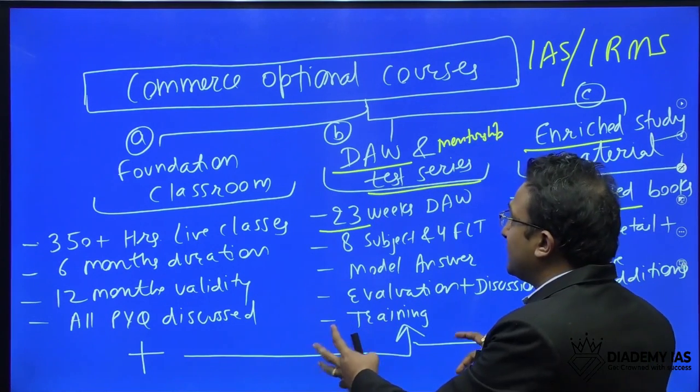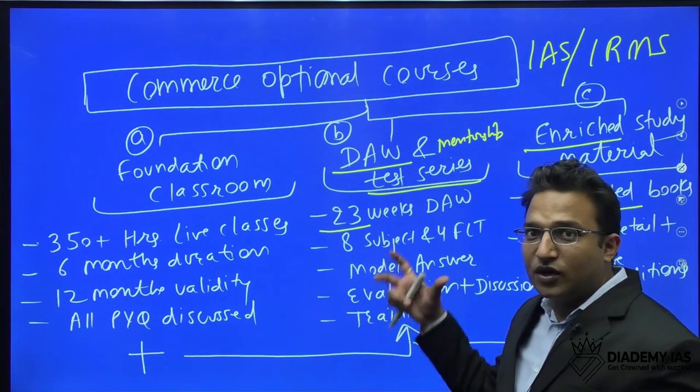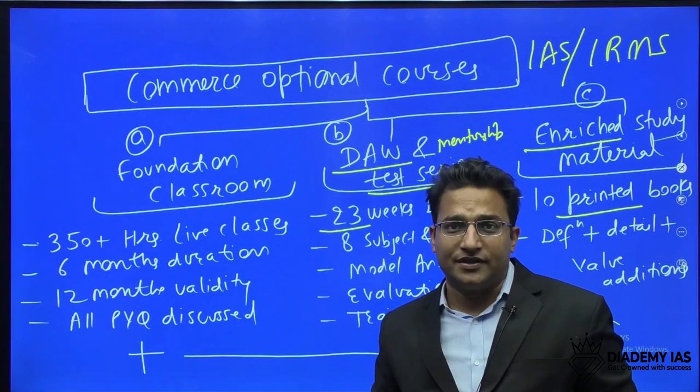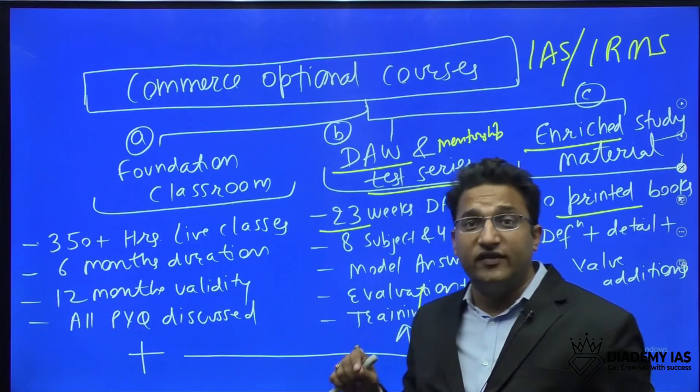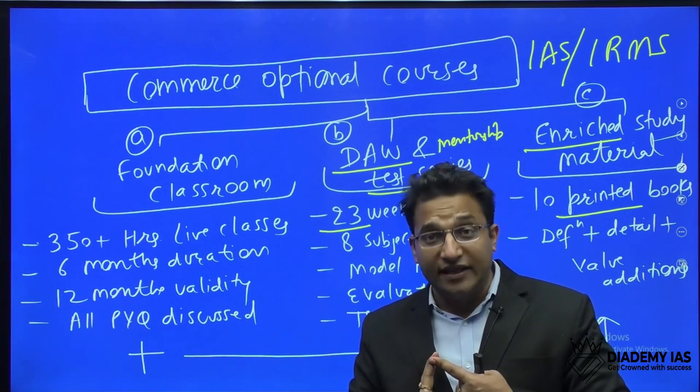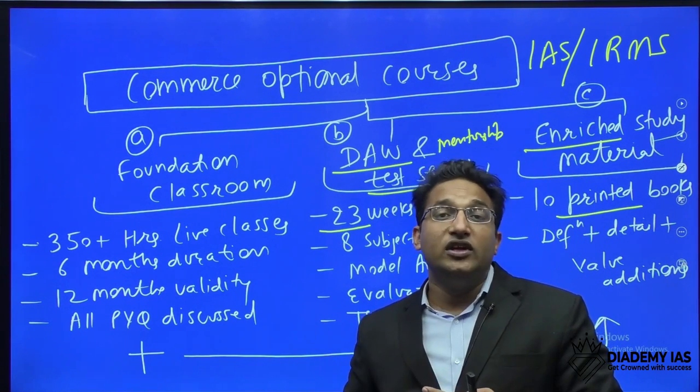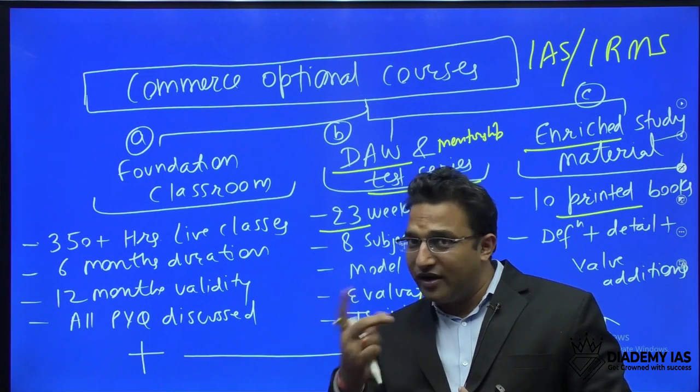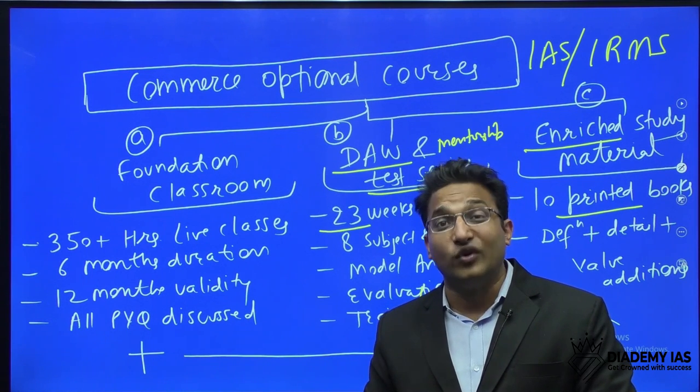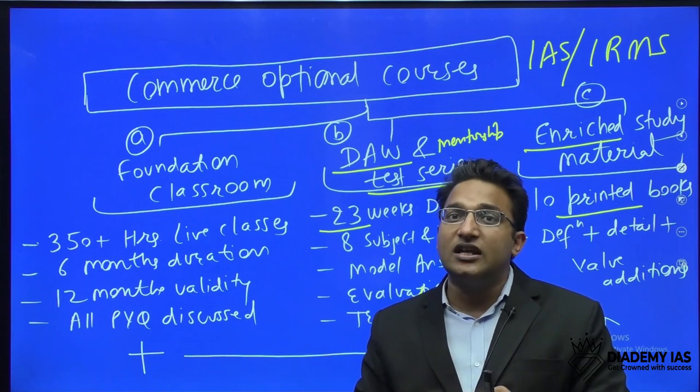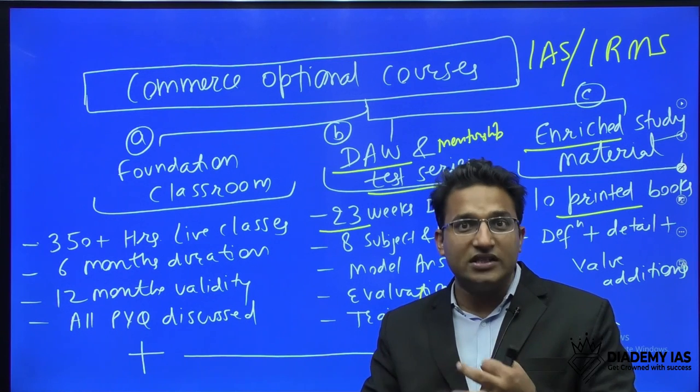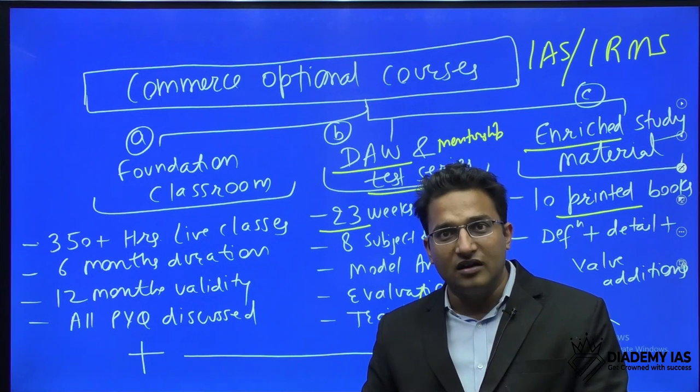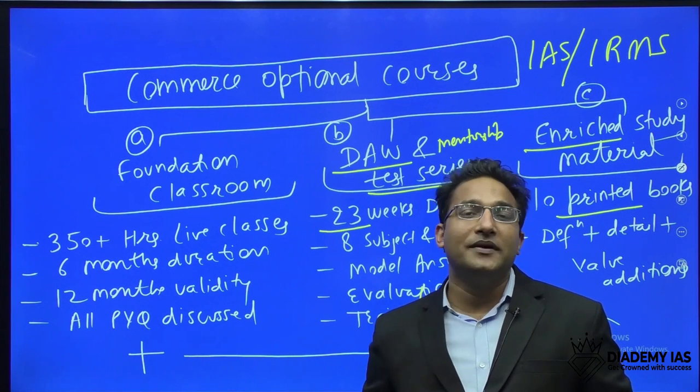This is a daily answer writing mentorship and test series program. In this program, you will get a detailed schedule that you can use for preparation purposes. Basically, there are three phases. In phase one, we give you daily answer writing. In phase two, we give you subject-wise tests - total eight subject-wise tests, approximately one to one and a half hours duration. Finally, there will be four full-length tests. Phase one is the preparatory phase, phase two is the revision phase, and phase three is the final phase. You will get detailed solutions, detailed answers, marks, and feedback.